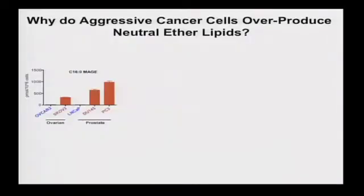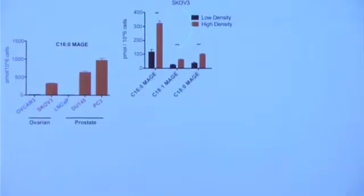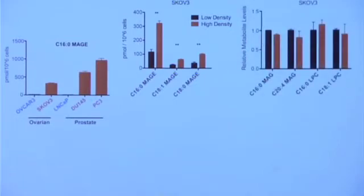I want to spend the last few minutes on some more recent data that we don't completely understand yet, but for the sake of being provocative I'll present it. We don't really understand why aggressive cancer cells overexpress this neutral ether lipid pathway, but as cancer cells go from non-aggressive to aggressive, they almost invariably possess huge levels of these neutral ether lipids. These lipids show remarkable density-dependent production: as aggressive cancer cells become highly dense or confluent, they substantially elevate their ether lipids. You don't see this with other classes of lipid biomolecules. In broad metabolomic profiling of lipids in a density-dependent manner, ether lipids are one of the few if only changes observed.